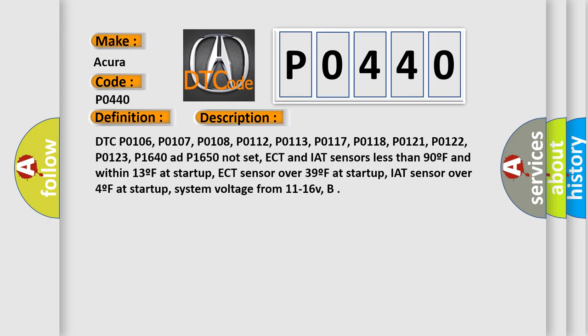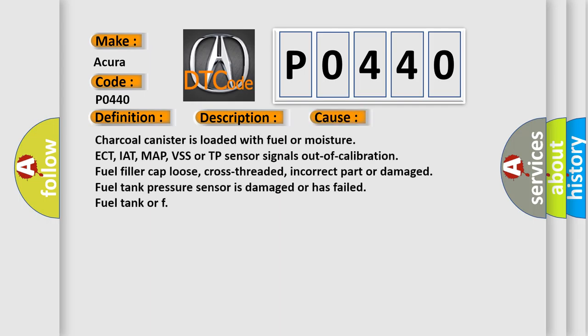This diagnostic error occurs most often in these cases: Charcoal canister is loaded with fuel or moisture. ECT, IAT, MAP, VSS, or TP sensor signals out of calibration. Fuel filler cap loose, cross-threaded, incorrect part, or damaged. Fuel tank pressure sensor is damaged or has failed. Fuel tank leak.